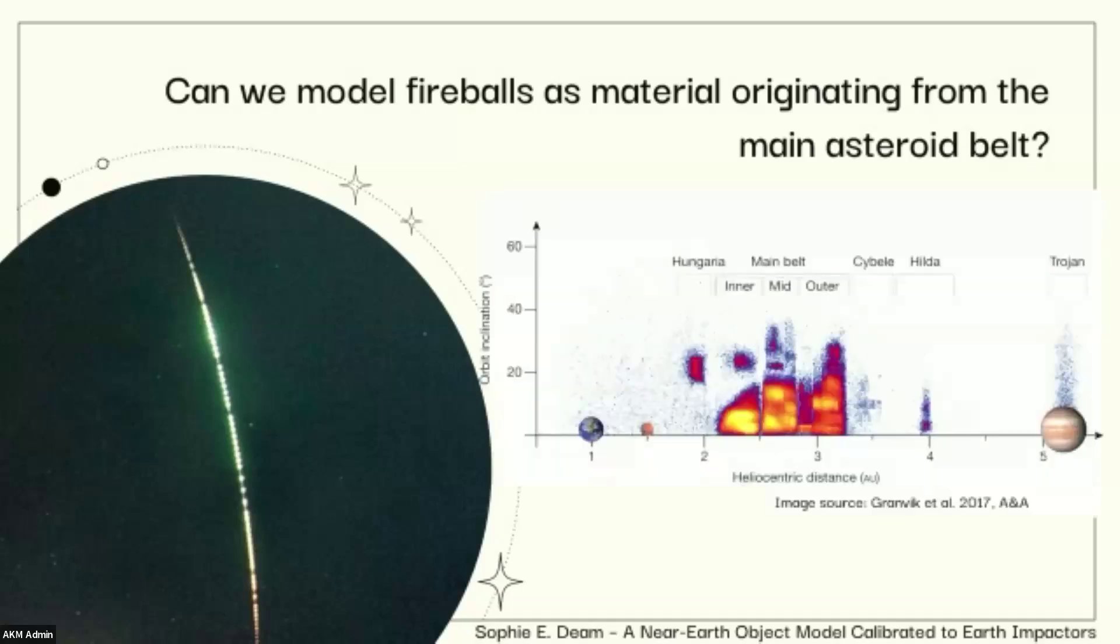So how does material come from the main asteroid belt? If we look here at a density plot of where large asteroids are in heliocentric distance versus orbital inclination, you can see that there are a couple of gaps in the asteroid belt. These gaps are caused by resonances. They can be mean motion resonances with Jupiter, which Ariane touched on yesterday, such as the 3-1J, 5-2J, and 2-1J, or it could be a secular resonance, such as the NU-6 that's highlighted there. And what these resonances do is that they can increase the eccentricity of an orbit, and that will bring it closer to Earth, bringing it into the near-Earth space.